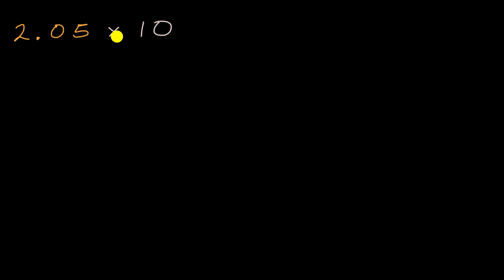In previous videos, we've said that when you multiply by 10, you shift each digit one place to the left. So instead of two ones, we now have two tens. Instead of zero tenths, we have zero ones. And instead of five hundredths, we have five tenths. This equals 20.5.